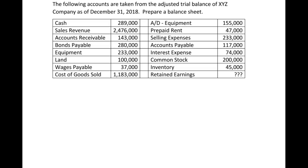One thing you need to do here — remember we're preparing a balance sheet — so you need to go through and eliminate anything that's not on the balance sheet, for example all the income statement items. Sales revenue is not on there. Cost of goods sold will not be included. Selling expenses will not be on the balance sheet. Interest expense will not be on the balance sheet. Also, retained earnings is not given, so we need to figure that out.